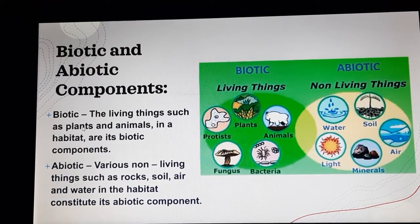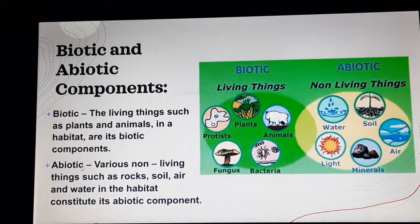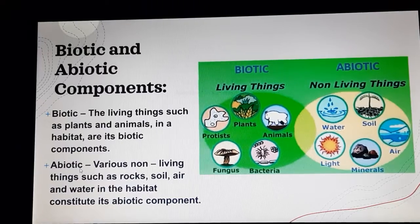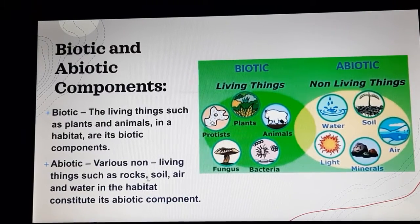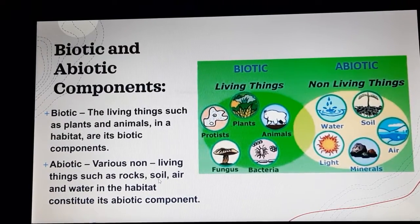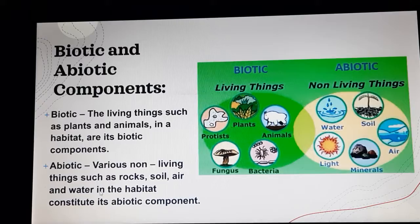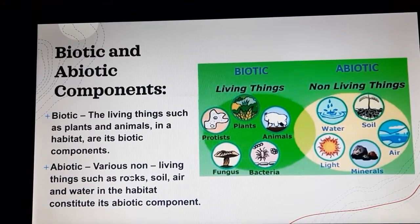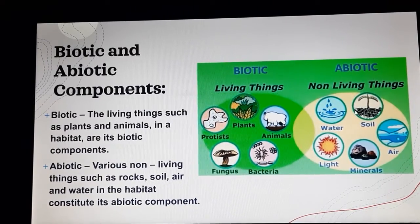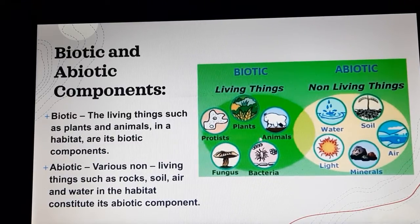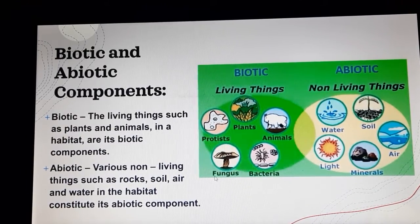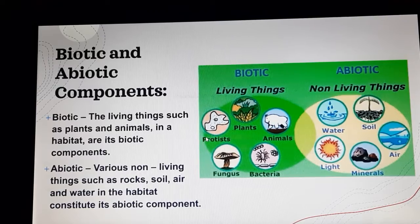Biotic components need abiotic components to live and survive. For example, air, water, and soil are needed. In this picture, under biotic things we have all the living things like plants, animals, bacteria, fungus and protists.